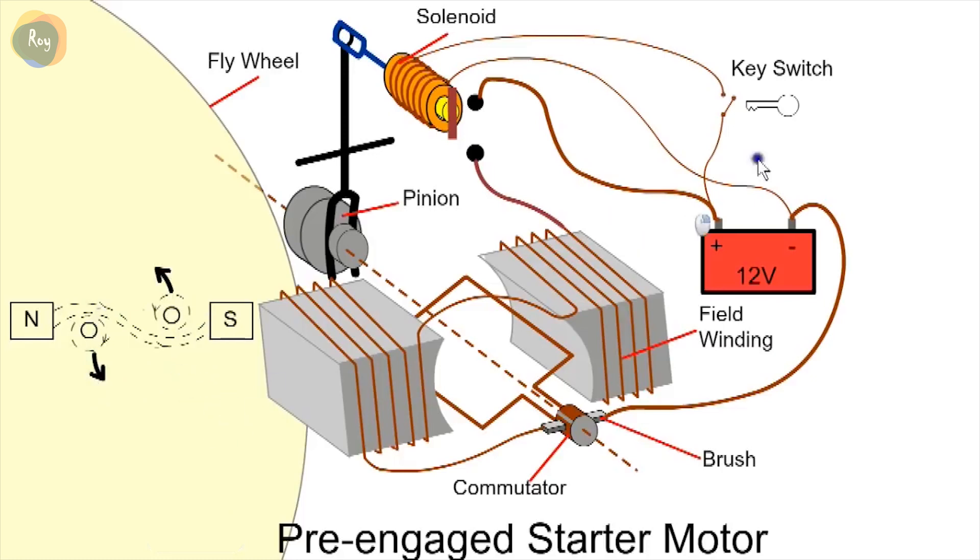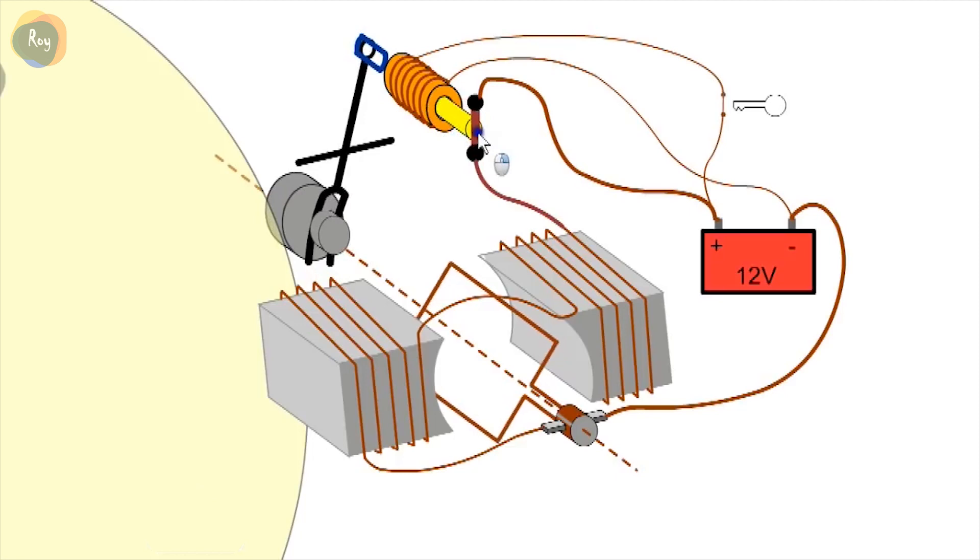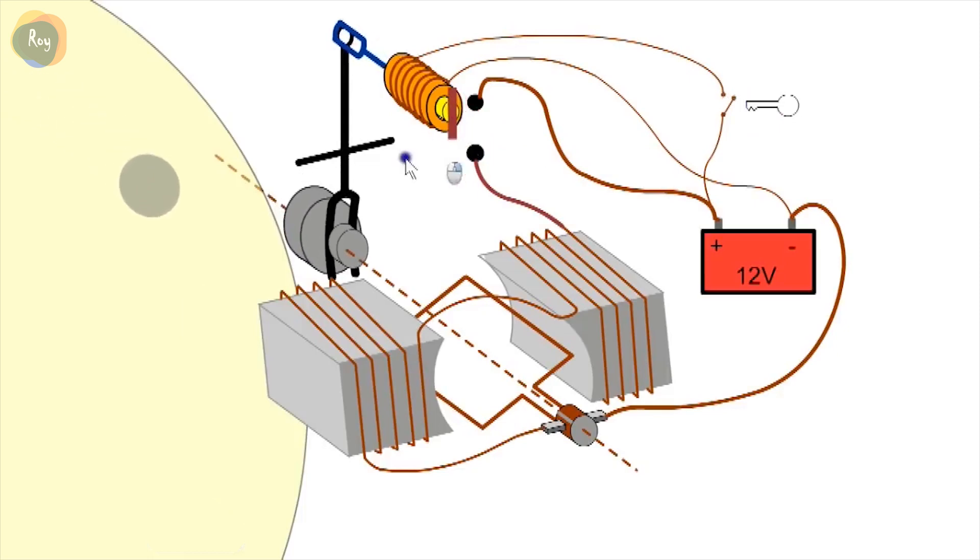When the key is turned, the solenoid or relay is energized. The plunger moves forward and engages the pinion with the flywheel. At the end of its travel, it closes the main contacts for the starter. High current passes through the heavy cables and the motor rotates and cranks the engine. When the key is released, the solenoid moves back, stops the motor and disengages the pinion. Note, the flywheel remains rotating.